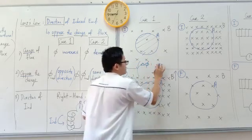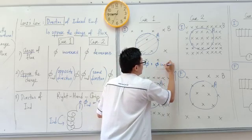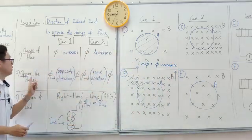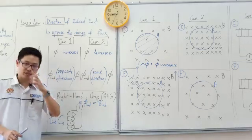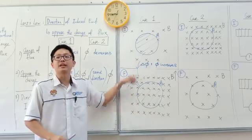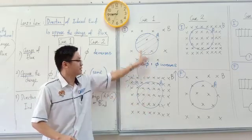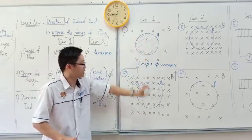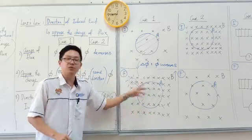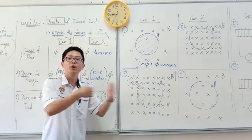What is the change of flux? The flux has increased. Now we must oppose the change. To oppose the change — if something increases, I want to decrease that. I don't want it to increase. The flux is increasing. How to decrease that? Try to oppose it.